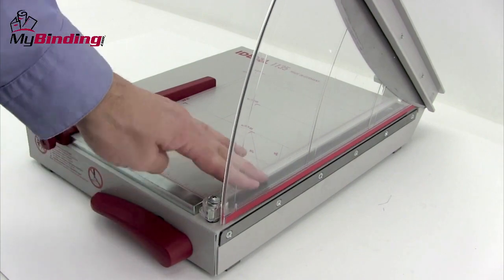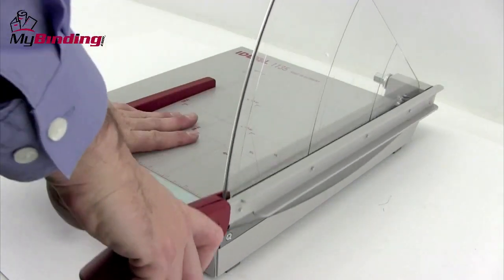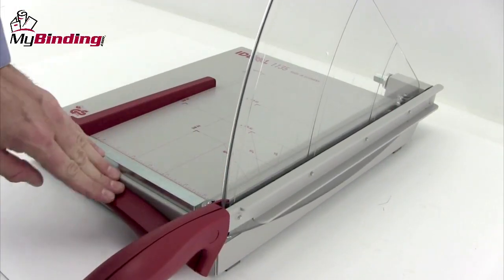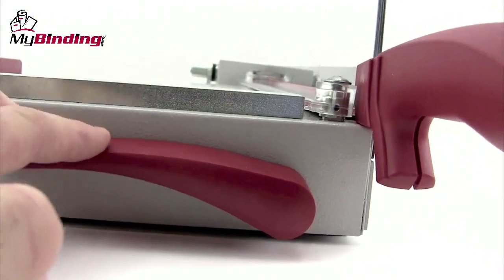This is an all-metal, solidly built trimmer. An excellent feature is the paper holder. It moves up and down with the movement of the arm and can be overridden here with this lever.